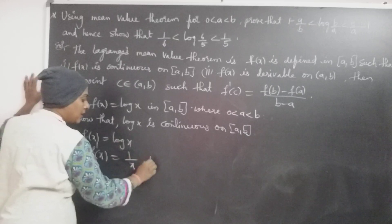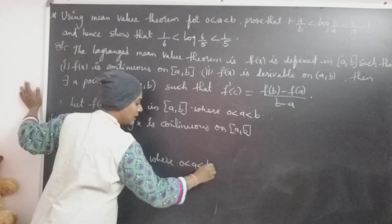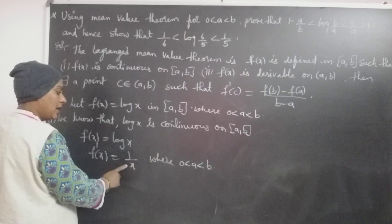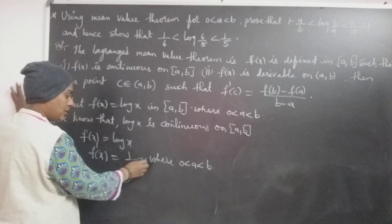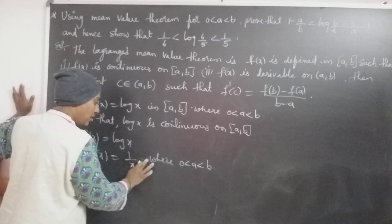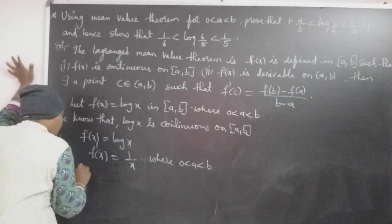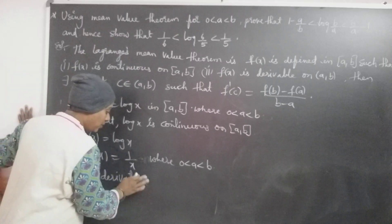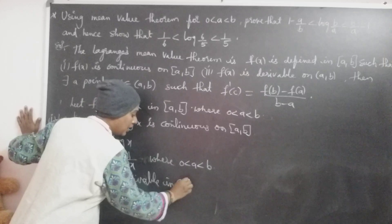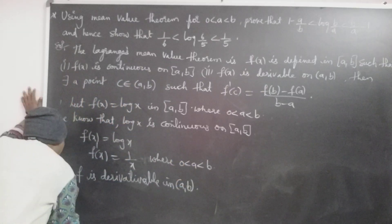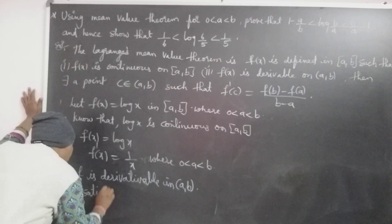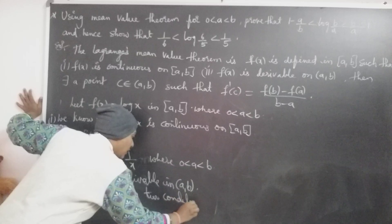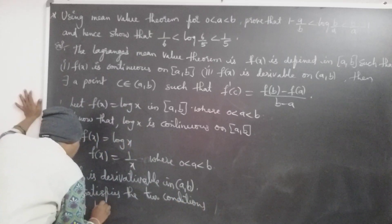The second condition: f(x) = log x, and the derivative f'(x) = 1/x. Since 0 < a < b, x belongs to open interval (a, b) means x is a positive value, not equal to zero and not equal to infinity. Therefore f'(x) = 1/x exists and is finite, so f is derivable on open interval (a, b). Thus f(x) = log x satisfies both conditions of Lagrange's mean value theorem.